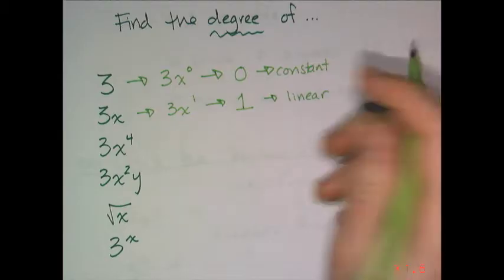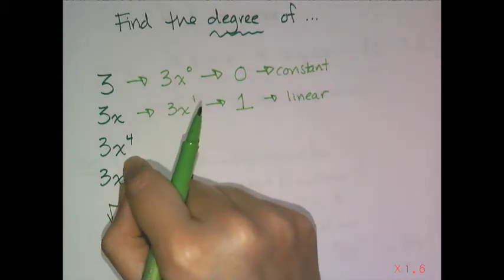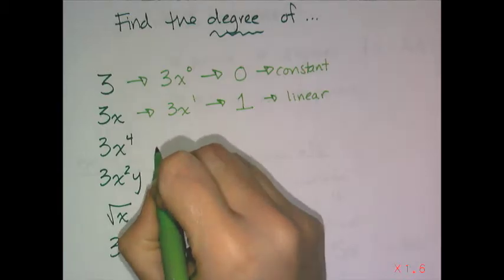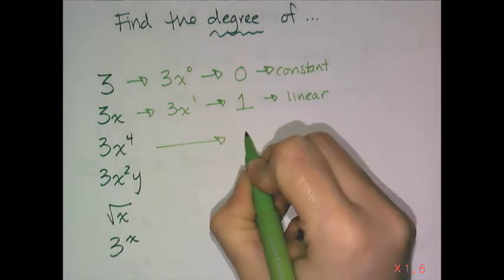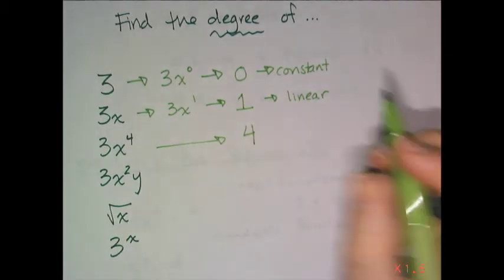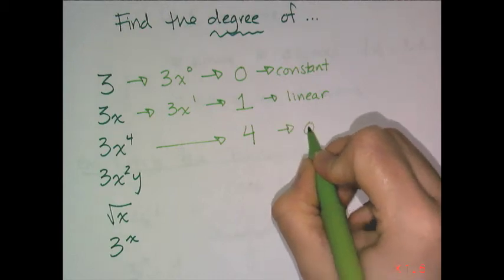Now this example is more straightforward because the exponent is right there on the variable, so this thing has a degree of 4, and we call this a quartic term.